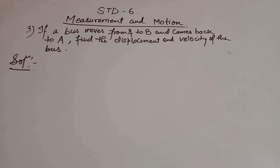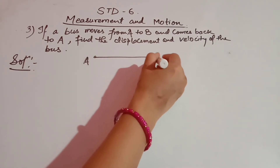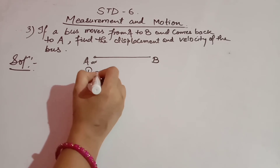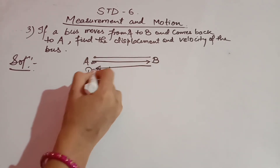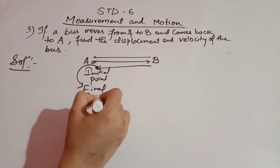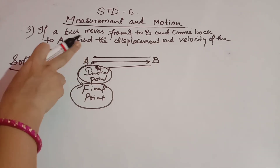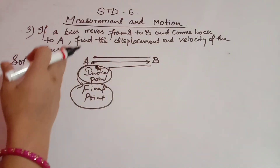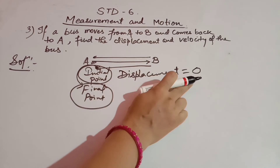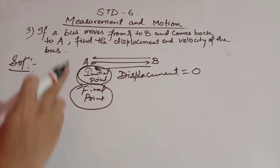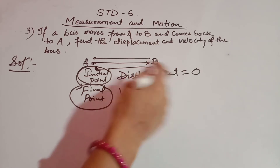Next question: if a bus moves from A to B and comes back to A, find the displacement and velocity. This is point A, this is point B. The bus starts from A, which is the initial point. The bus moves from A to B, then comes back from B to A. The final position is again A. When the initial point and final point are the same, the displacement is zero — because the initial position and the final position of the bus is the same point A. When displacement is zero, velocity is also zero, since velocity equals displacement by time.